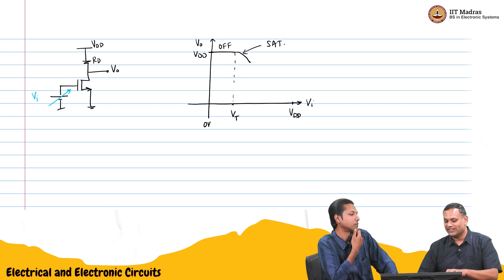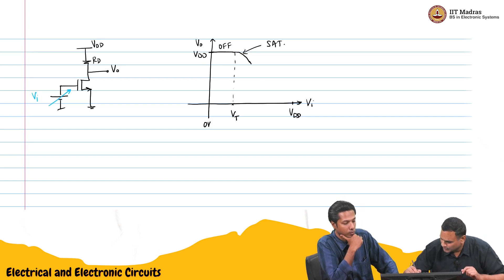And that will happen when the gate voltage is high, the drain voltage is small. And the drain voltage is small when the current is high. Because resistance is fixed. It will do something like this. Till some point it will be in saturation. And after that it will enter triode. Vi has increased, Vo has decreased.